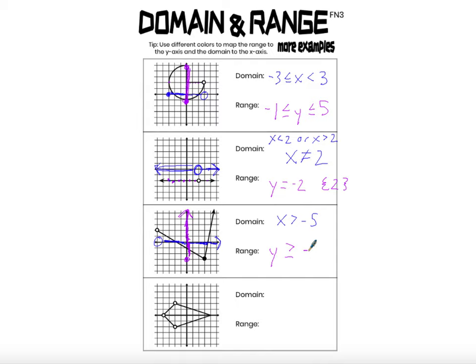We have to verify that this open dot doesn't change the range — that we don't need to say y cannot equal 2. And we don't have to say that because there is another point here with a y-coordinate of 2. So this open dot does not affect the range.